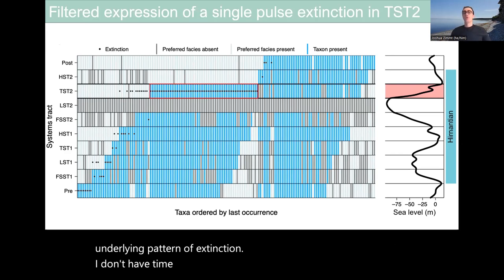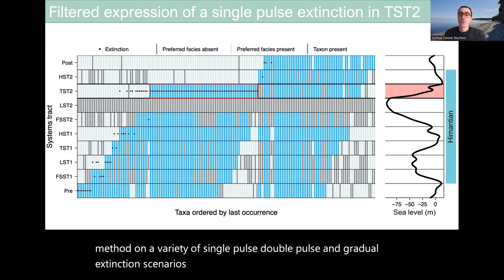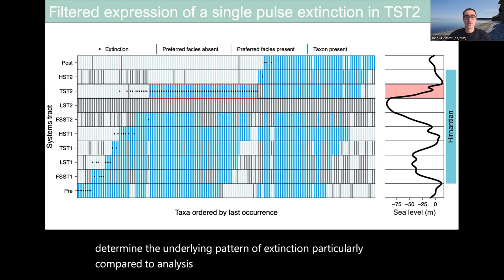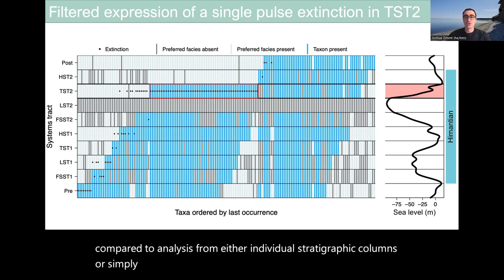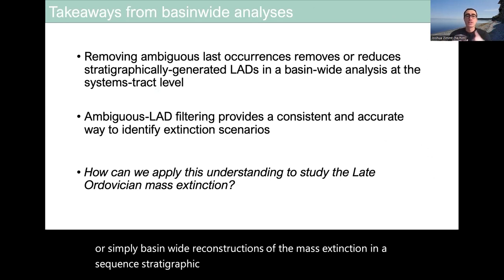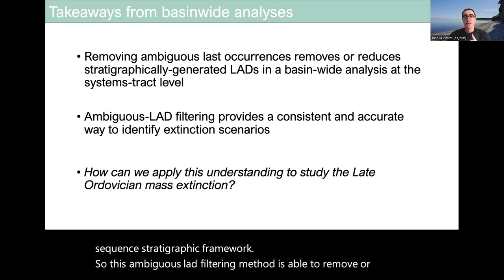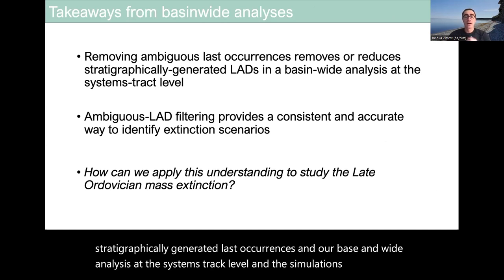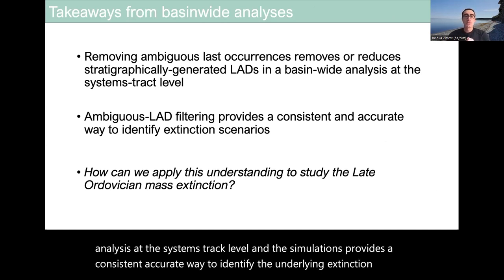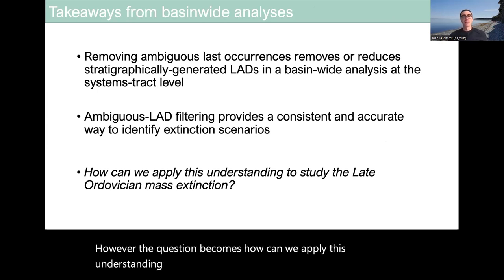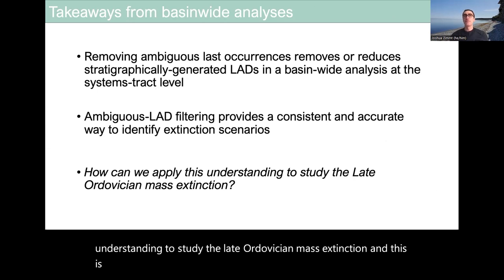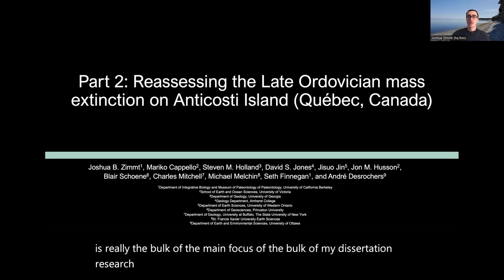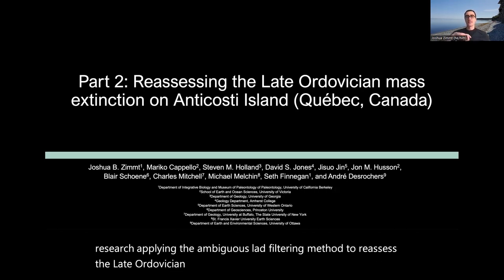Applying the ambiguous LAD filtering method to the second transgressive systems tract extinction scenario recovers a single pulse of last occurrences coinciding with the time of extinction, with earlier stratigraphically generated clusters reduced or removed. We've run this method on a variety of single pulse, double pulse, and gradual extinction scenarios, and each has accurately determined the underlying pattern of extinction compared to analyses from individual stratigraphic columns or simply basin-wide reconstructions. The question now becomes: how can we apply this understanding to study the Late Ordovician mass extinction?